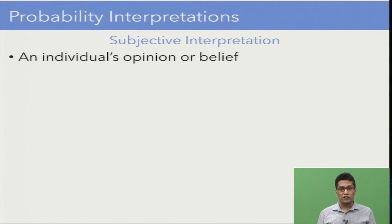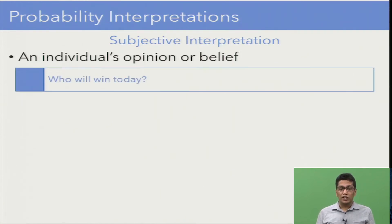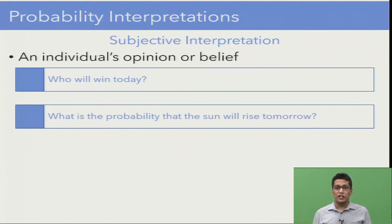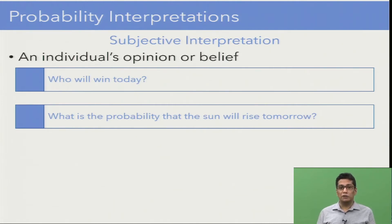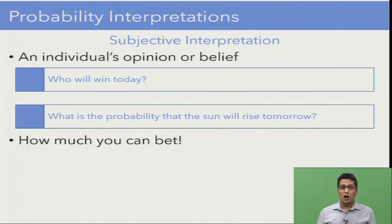The third interpretation is known as subjective belief. Sometimes we may have some opinion or belief about random experiments. For example, if I ask who will win today's match, we may not be able to repeat the outcome, but based on past experience or gut feeling we have some opinion about the winning team. Another example: what is the probability that the sun will rise tomorrow? From since our birth we have seen the sun come every day, so I would say the sun will come tomorrow with 100% probability — but there is no way to formally compute it. Sometimes this belief is measured by how much one is willing to bet; higher amounts indicate higher confidence.